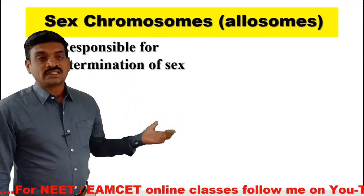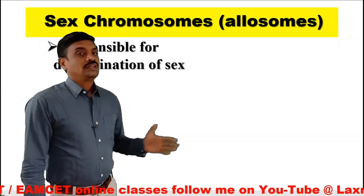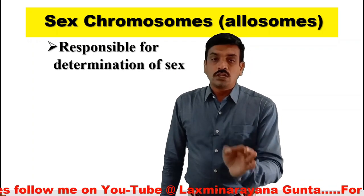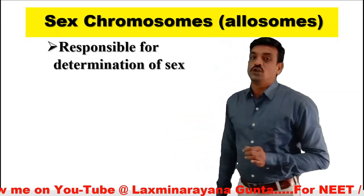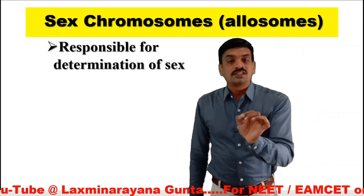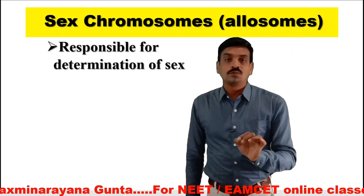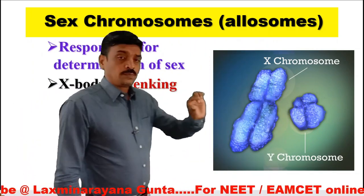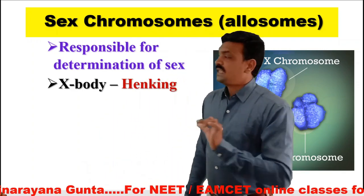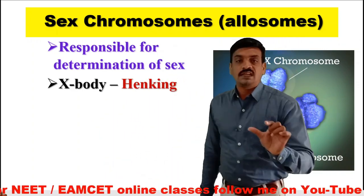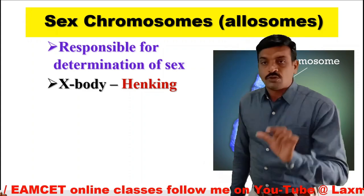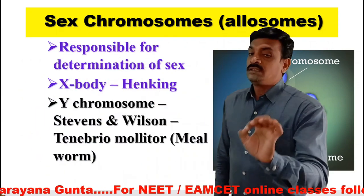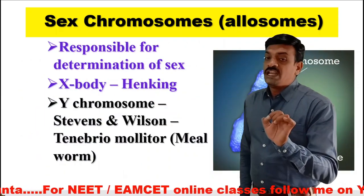Before we start the chromosomal theory of sex determination, let us learn what is an allosome and what is an autosome. Allosomes are also called sex chromosomes — they are responsible for the determination of sex. The X body was first discovered by a scientist named Henking. The Y chromosome was first discovered by Stevens and Wilson in Tenebrio molitor, a mealworm.